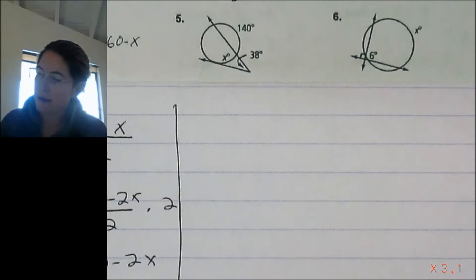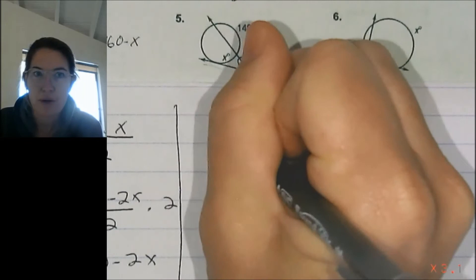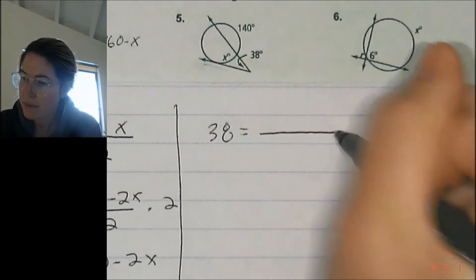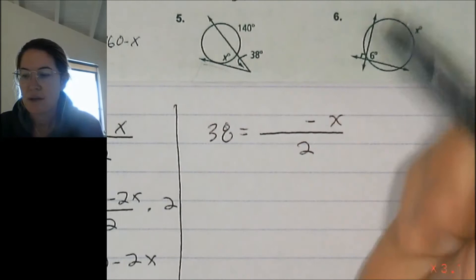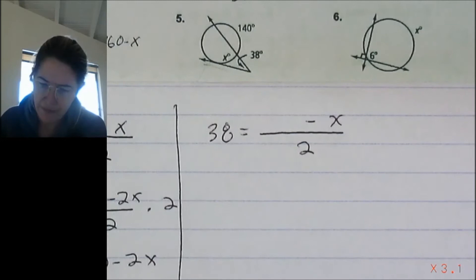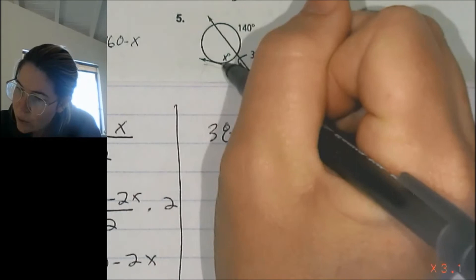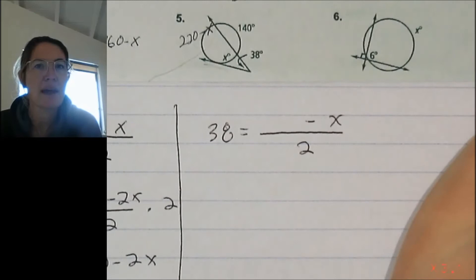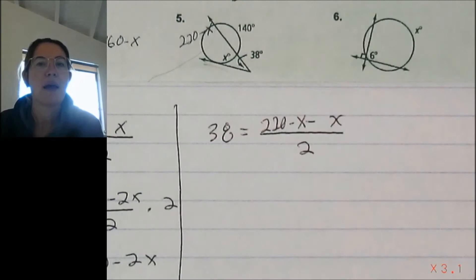Number 5: again, two lines intersecting outside. So the angle formed — 38 — equals the big arc minus the small arc x, divided by 2. The big arc: the whole circle is 360, and this chunk of 140 is taken, so 360 minus 140 leaves 220. So the big arc is 220, and the remaining part is 220 minus x.